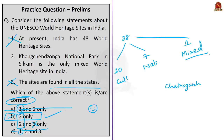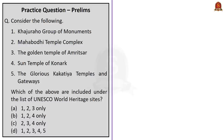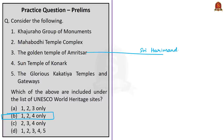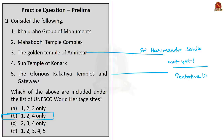The third question asks which of the following are UNESCO World Heritage Sites: Khajuraho Group of Monuments, Mahabodhi Temple Complex, the Golden Temple of Amritsar, the Sun Temple of Konark, and the Glorious Kakatiya Temples and Gateways. The correct answer is option B (1, 2, and 4 only). The Golden Temple of Amritsar (Sri Harmandir Sahib, Punjab) and the Glorious Kakatiya Temples and Gateways in the Warangal region of Telangana are not yet included in the UNESCO World Heritage List, though they are in the tentative list.